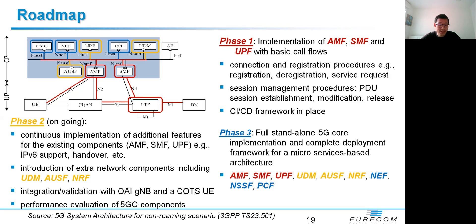For phase two, which is where we stand now, we continue to support additional features for existing components such as IPv6 support and handover procedures. We also implement new entities such as UDM and AUSF for authentication, and NRF for service registration and discovery. We also want to integrate our core with our OAI gNodeB and test with a real UE, and we will work on performance evaluation such as the number of supported UEs, throughput, and network processing delay. Finally, in phase three, we end up with a full standalone 5G Core implementation and a complete deployment framework for microservices-based architecture.